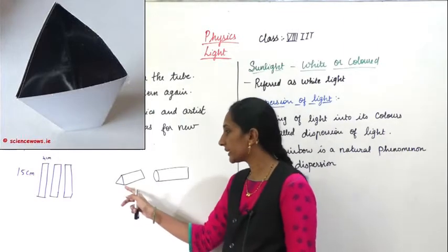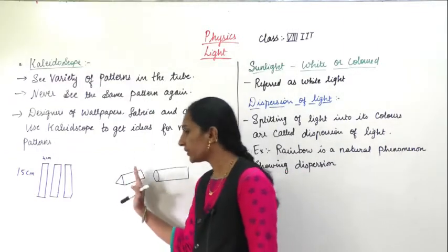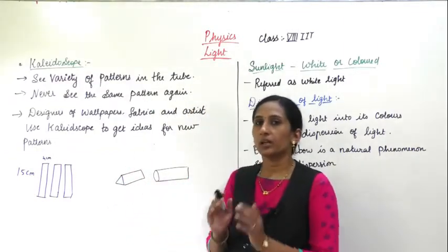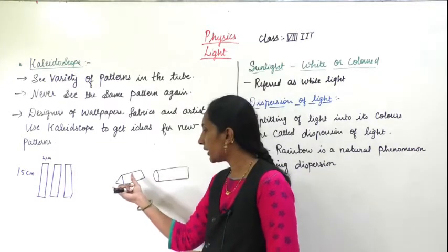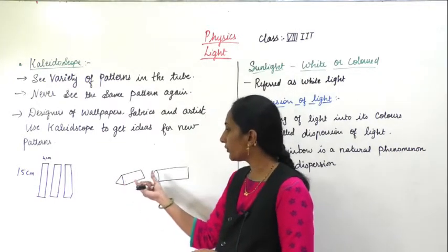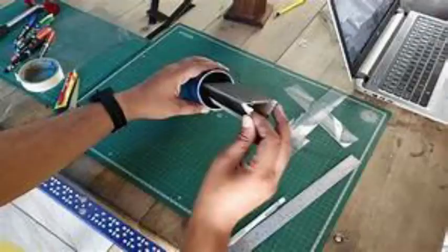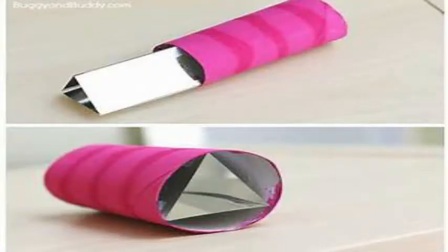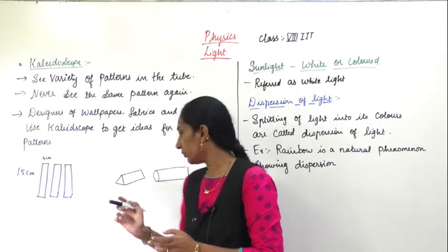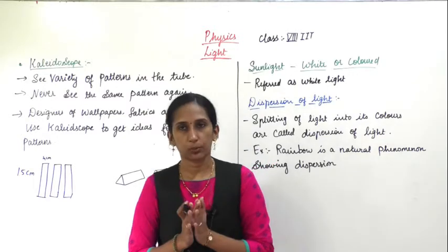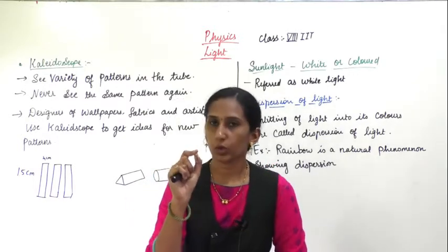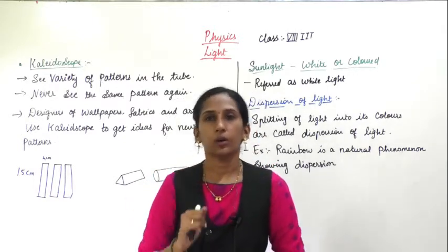After sticking the mirrors together, you have to take a circular roll of cardboard or any roll. Inside that, you have to keep this mirror setup inside the cardboard roll. Then on one side you will stick a circular cardboard and prepare a small hole on that.